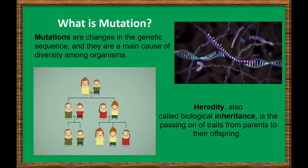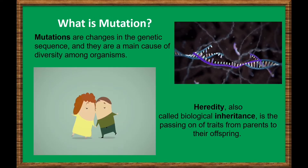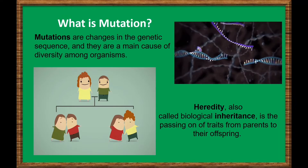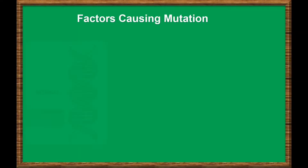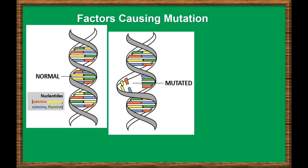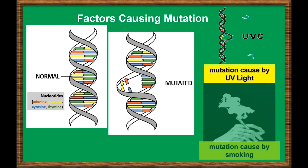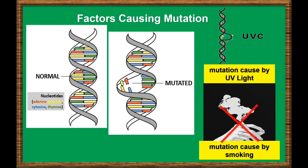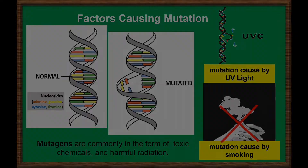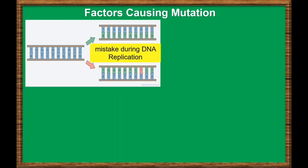Keep in mind that some mutations affect only the individual that carries them, while others affect all of the carrier organism's offspring and further descendants. A mutation is a change that occurs in our DNA sequence, either due to mistakes when the DNA is copied or as the result of environmental factors such as UV light and cigarette smoke. We call factors that cause mutation mutagens. Mutagens are commonly in the form of toxic chemicals and harmful radiation.